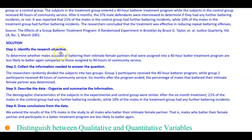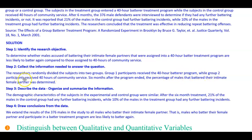Step one — identify the research objective: to determine whether males accused of battering their intimate female partners assigned to a 40-hour batterer treatment program are less likely to batter again compared to those assigned to 40 hours of community service. Step two — collect the information: the researchers randomly divided subjects into two groups. Group one received the 40-hour batterer program; group two received 40 hours of community service. Six months after the program ended, the percentage of males who battered their intimate female partner was determined.